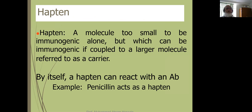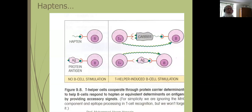A hapten is a molecule too small to be immunogenic alone, but which can be immunogenic if coupled to a larger molecule referred to as the carrier molecule. By itself, a hapten can react with an antibody — for example, penicillin acts as a hapten. Antigen without immunogenicity is a hapten: it can bind but it cannot stimulate antibody production. A hapten can bind with a paratope or a B cell receptor, but it cannot induce the B cell to produce antibody. However, when it is bound with a carrier, then the T helper cell will stimulate the B cell to produce antibody against that hapten.